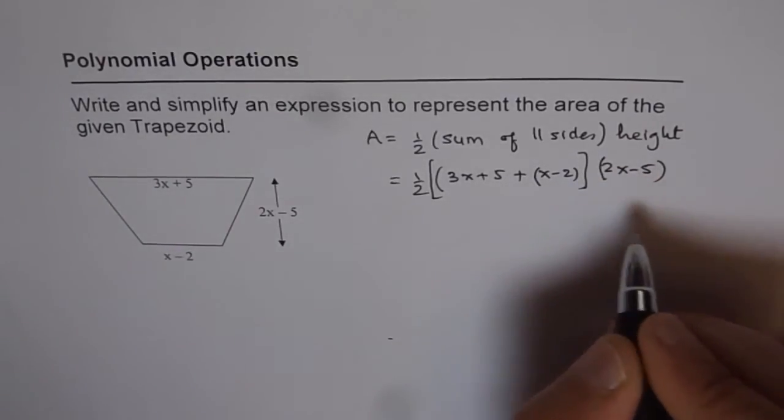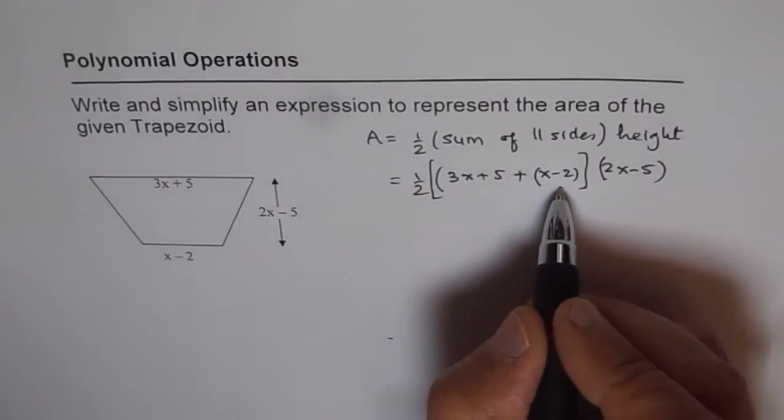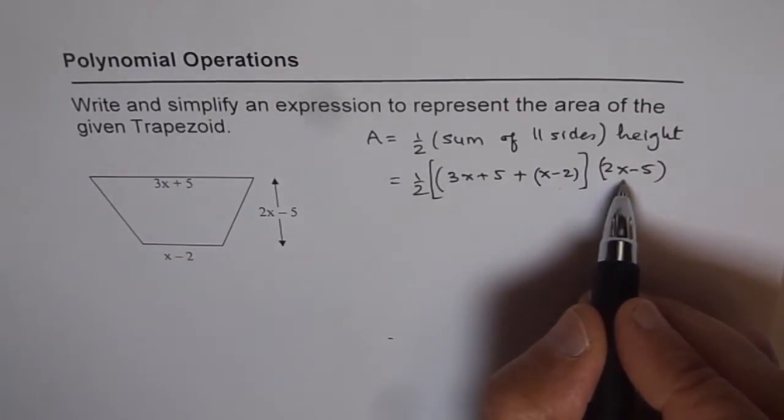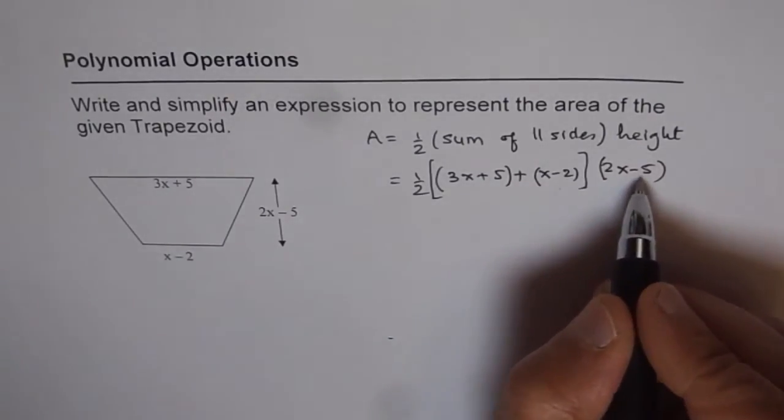It is good practice to use brackets. It makes things very clear. Half, and that is the sum of the sides, let me put a bracket here also, and that is times height.